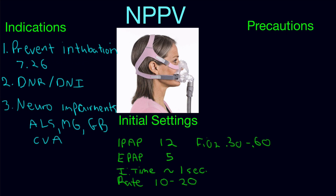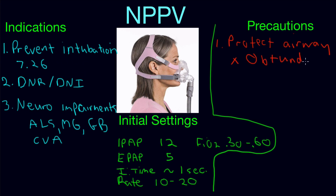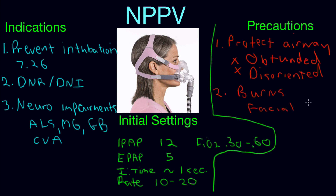Let's talk about the precautions to think about when choosing NPPV. One of the most important things is that the patient has to be able to protect their airway — this is vitally important. The patient should not be obtunded or disoriented, because if they are, they're at risk of aspirating and getting into much more trouble. Also, you definitely do not want to use a BiPAP mask on a patient with burns to the face, any type of facial trauma, or head trauma.